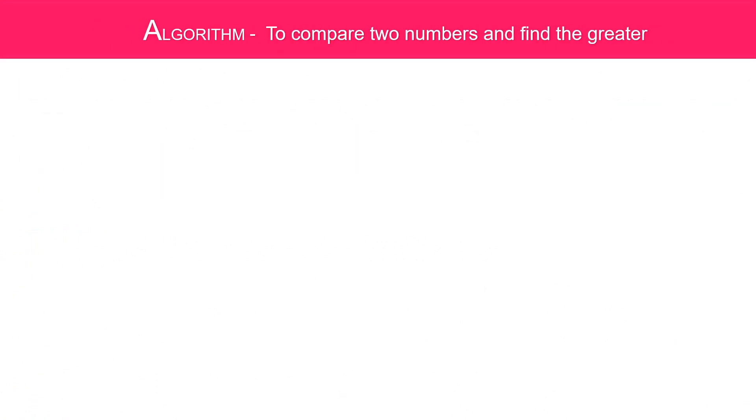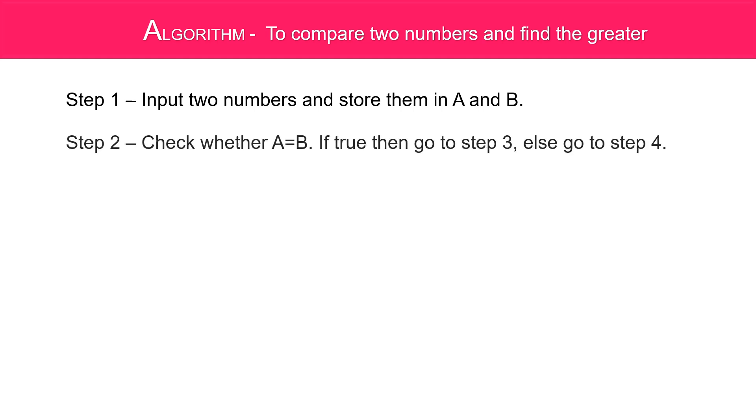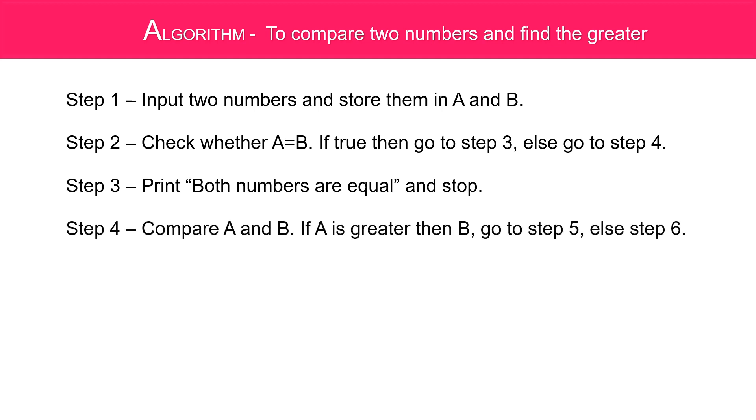Algorithm to compare two numbers and find the greater. Step 1: input two numbers and store them in A and B. Step 2: check whether A is equal to B. If true, then go to step 3 - print both numbers are equal and stop. Else go to step 4: compare A and B.